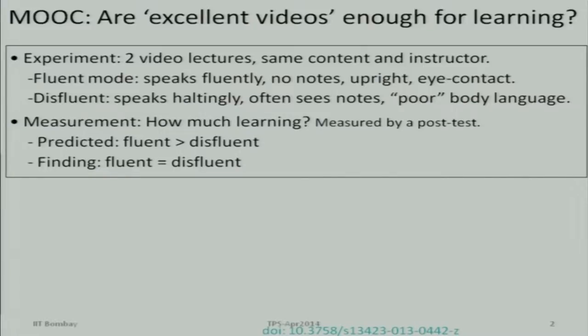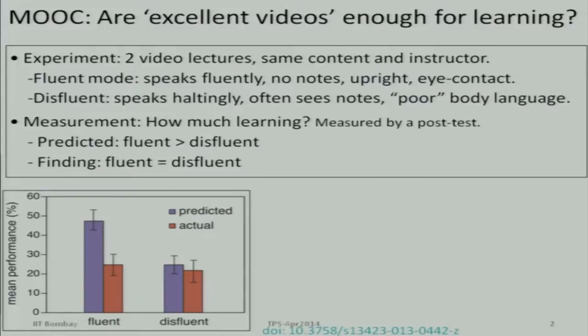I will talk about one experiment. Two video lectures were created where all the correct things were done — duration, topic, and content were the same. In one case the instructor spoke fluently, made eye contact, and did not refer to notes. In the other case the instructor spoke very haltingly, kept looking down, and kept hesitating. Interestingly, there was no difference in the amount of learning that happened, in terms of what students scored on the exam.